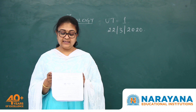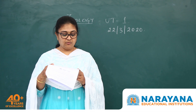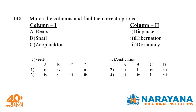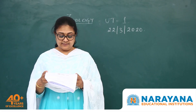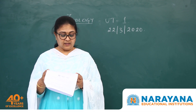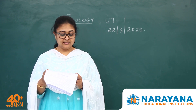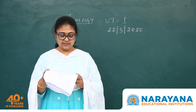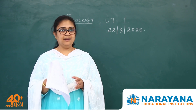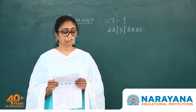Question 148 is a match-the-following question. In the first column are organisms and in the second are features they exhibit. Bears exhibit hibernation, snails exhibit estivation, zooplankton exhibit diapause, and seeds exhibit dormancy. So option 4 is the correct one.